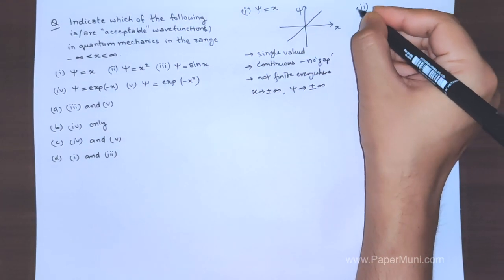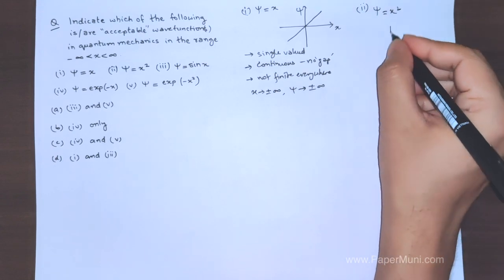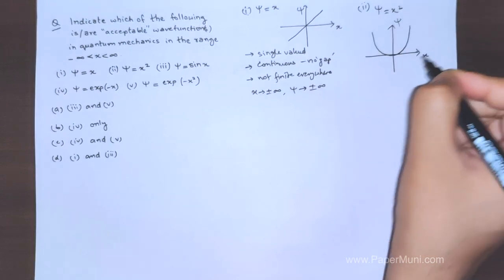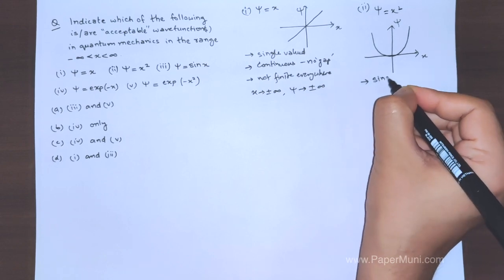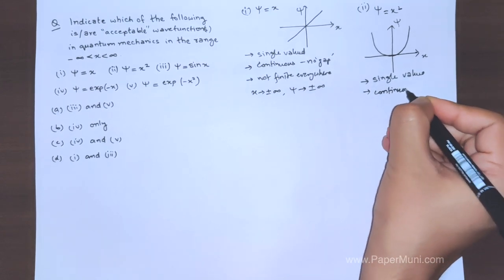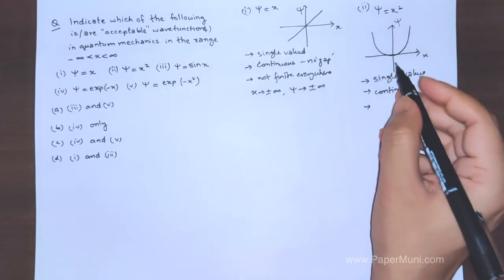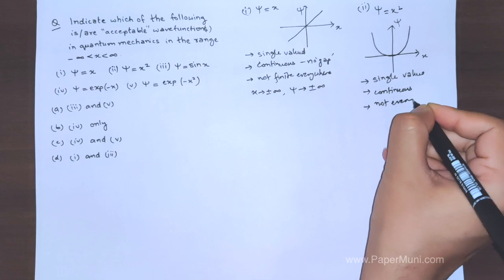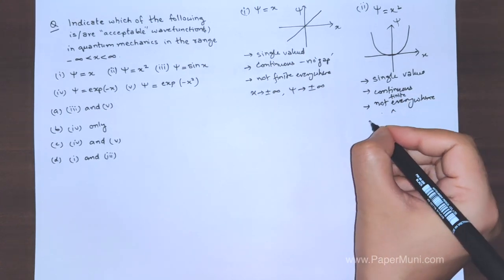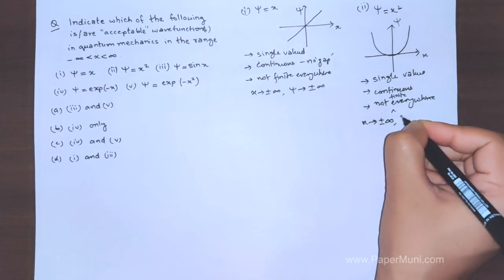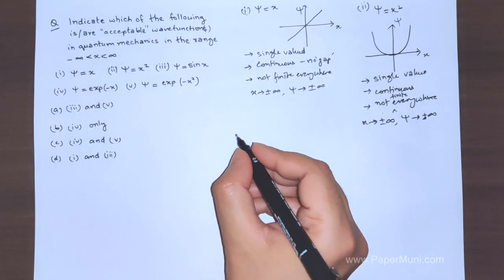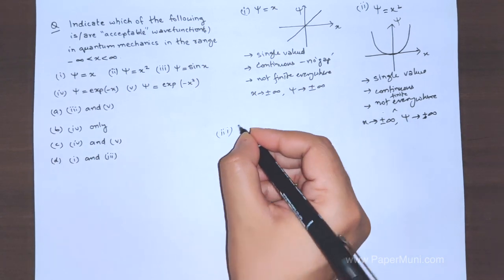For ψ = x², this is a parabola. For each value of x there is a single value of ψ, so it is single-valued. It is continuous with no gap in the graph. However, it is again not finite everywhere — as x tends to plus or minus infinity, ψ goes to plus infinity, so it diverges and is not acceptable.